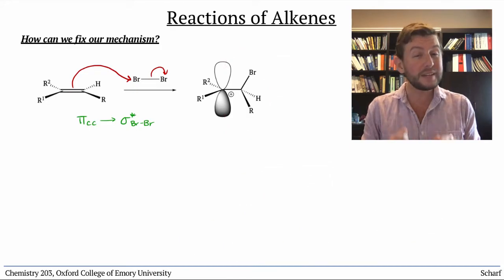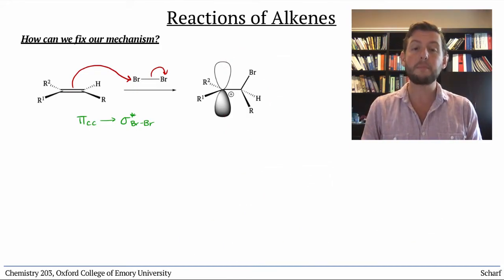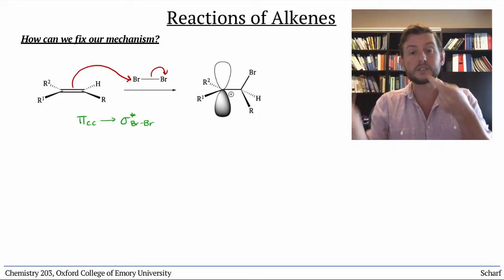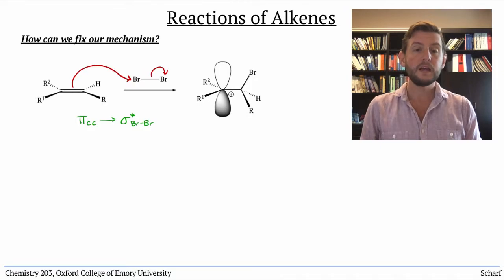Since our prediction got the stereochemistry wrong, let's focus on the part of our mechanism where we anticipated getting a mixture, the Br- coming into either side of that carbocation's p orbital. Clearly, there must be something else going on here.